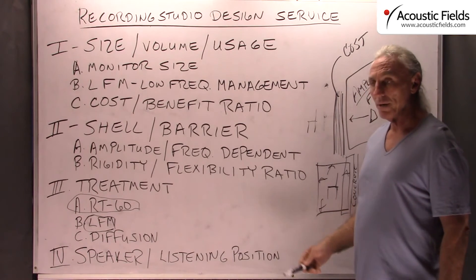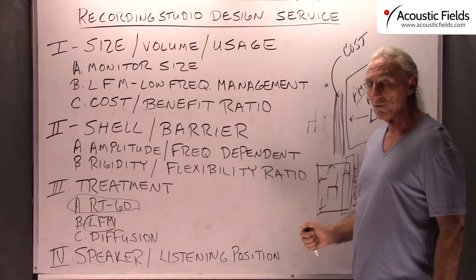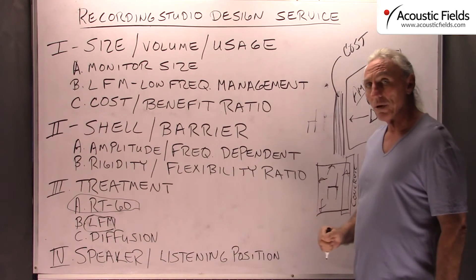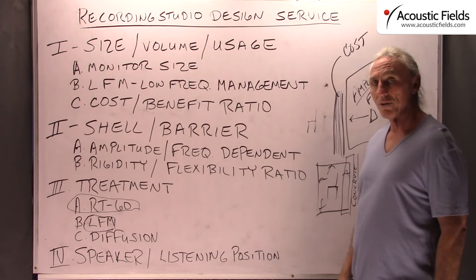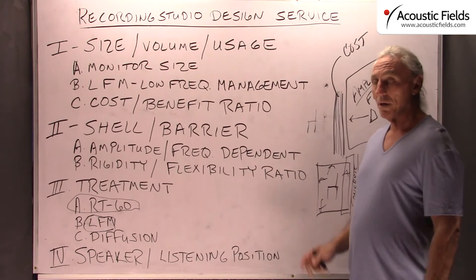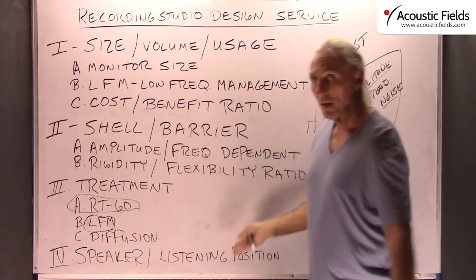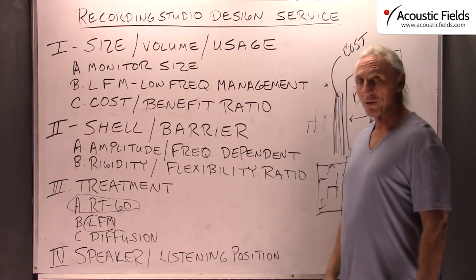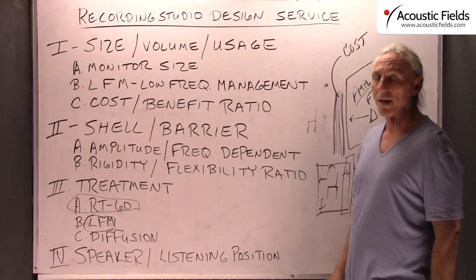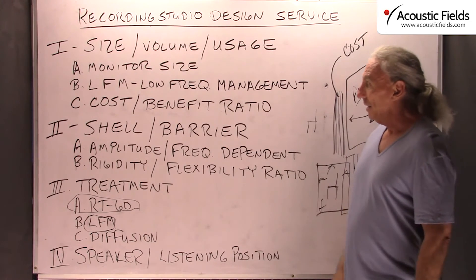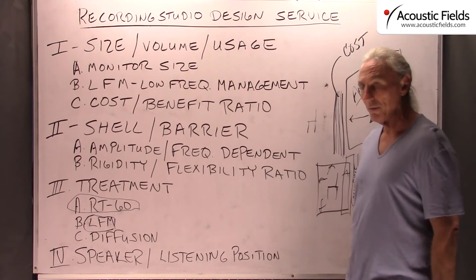To give you an idea — with our carbon technology, which is the most powerful technology in the world to date, we need at least 12 inches of space to impact a change down into 30 cycles. So if you don't have the right size and volume of the room and you have to give up 12 inches of space all the way around the room, you can see the impact that has on cost and everything else. You have to study all this stuff ahead of time.